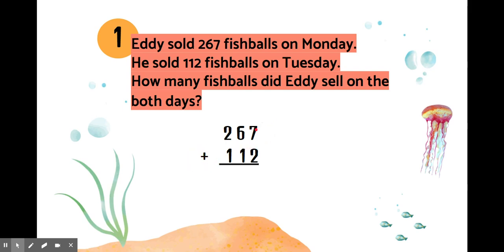Let's start adding number from the ones. 7 plus 2 is equal to 9. 6 plus 1 is equal to 7. 2 plus 1 is equal to 3.